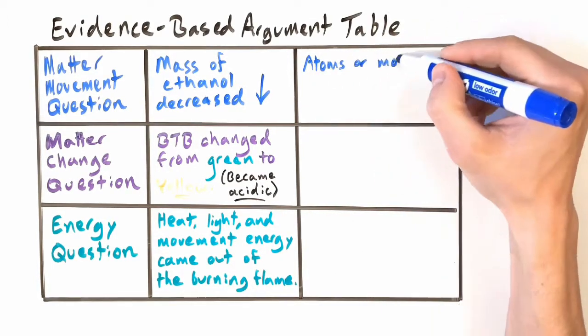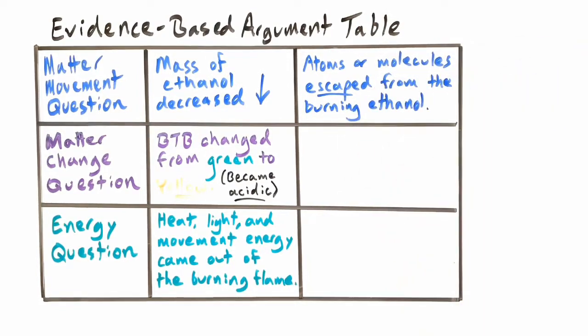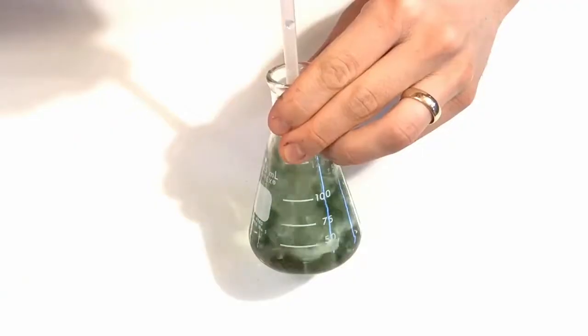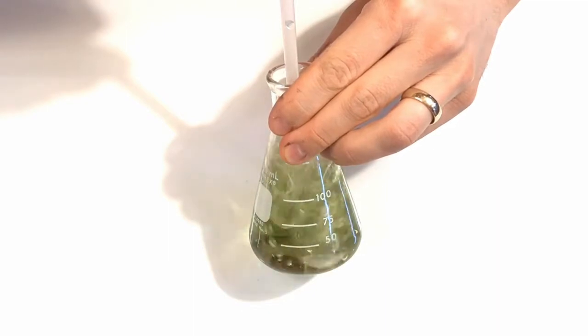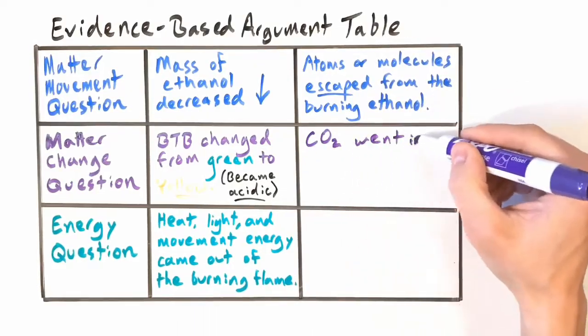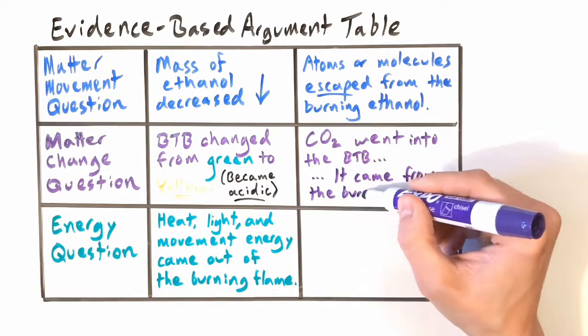Our first observation must mean that atoms or molecules escaped from the burning ethanol - they left, otherwise how could the mass decrease? What about the observation that our BTB changed from green to yellow? Well, we've already seen that one of the things that turns BTB yellow is when carbon dioxide is added, for instance from your breath. So it's reasonable to conclude that carbon dioxide went into the BTB, and the only place it could have come from was that burning flame.